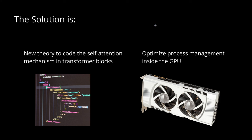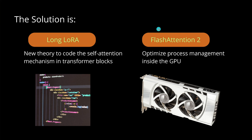We will use every trick in the book. We have the GPU as our workhorse and we'll optimize the process management inside the GPU. We'll also look at the mathematical formula of the self-attention mechanism in the transformer block and develop a simple but efficient new theory for coding self-attention. You know Flash Attention 1. Today I show you Flash Attention 2.